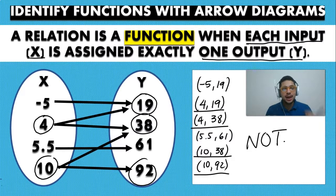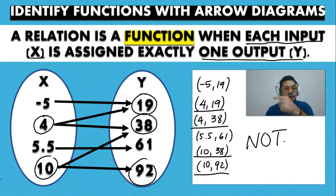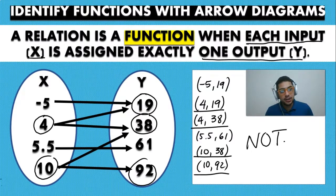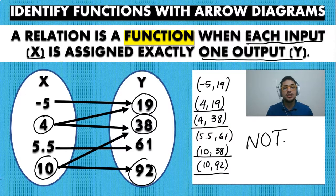Arrow diagrams really help you understand whether something is a function or not. If you see that one value of X has two Y's, then it is not a function. You can also write down all the points — if you see that one value of X repeats across multiple points, that X has more than one value of Y, meaning it's not a function. You can use arrow diagrams or simply list the ordered pairs.